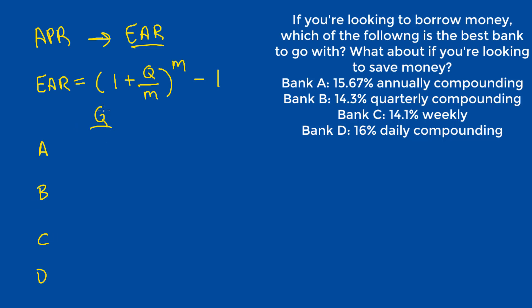We see that the quoted interest rate for A is 0.1567, and M, or the number of compounds per year, is 1 because it compounds annually. Similarly, for Bank B, it's 0.143 quoted interest rate, and 4 compounds per year because it's quarterly.